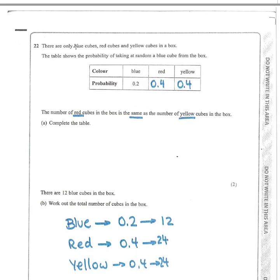Question 22: there are blue, red and yellow cubes in a box. The probability of picking a blue cube is 0.2, so the remaining probability is 0.8. Since red and yellow are equal in number, they each have probability 0.4. There are 12 blue cubes. Since 0.4 is twice 0.2, there must be twice as many red and yellow cubes: 24 red and 24 yellow. Total: 24 + 24 + 12 = 60 cubes.